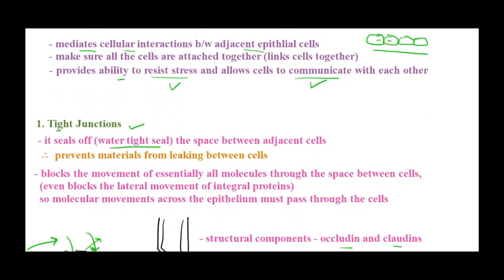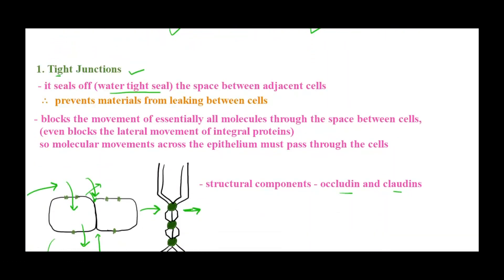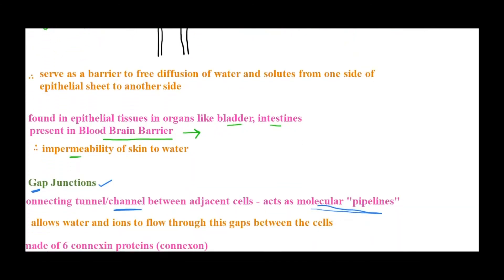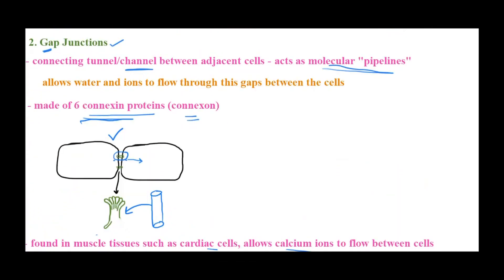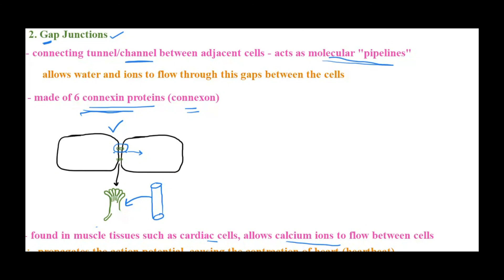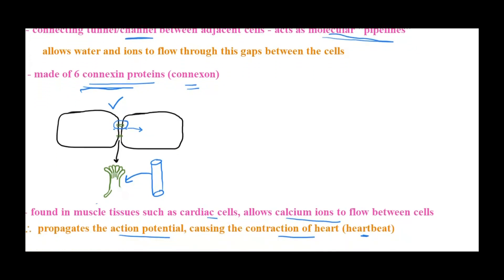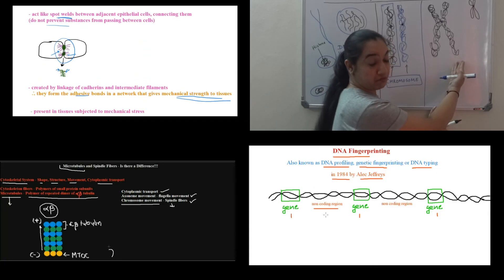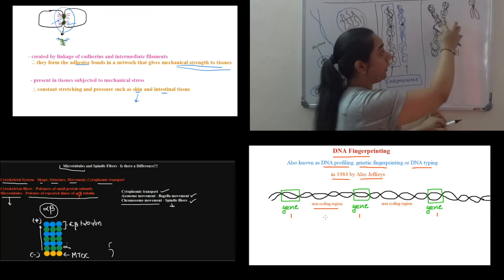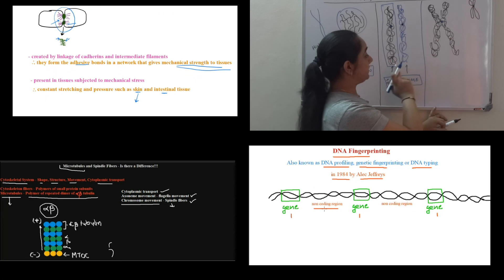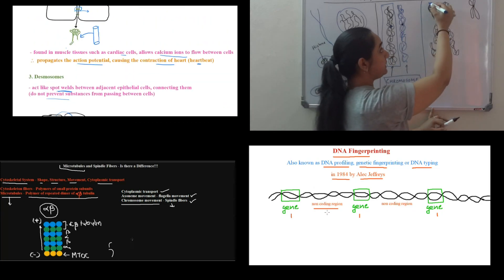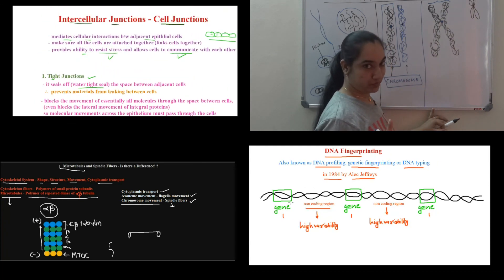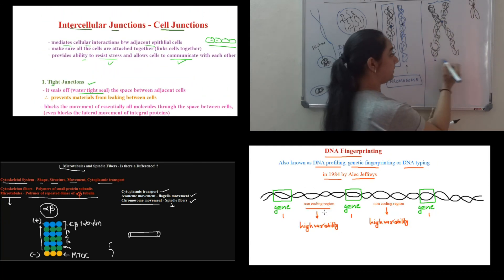To summarize, there are three types of intercellular junctions. Tight junctions give a watertight seal and allow no substances to pass between cells. Gap junctions allow water and ions to flow from one cell to another, enabling cells to communicate. Desmosomes are very strong adhesive bonds between cells, giving them strength against mechanical stress. I hope this video was helpful — do subscribe to the channel for a new video every week.